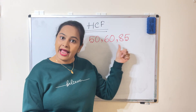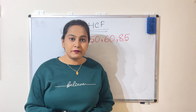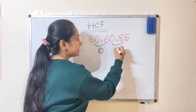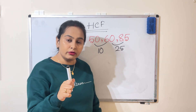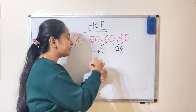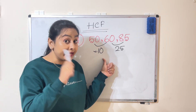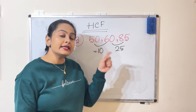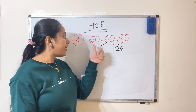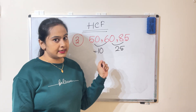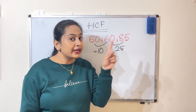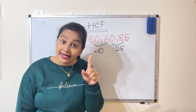In our third example, the numbers are 50, 60, and 85. The differences are 10 and 25. We choose the smaller one, which is 10. But we need to check whether 10 is a factor of all three numbers. 10 is a factor of 50, it is also a factor of 60, but 10 is not a factor of 85.